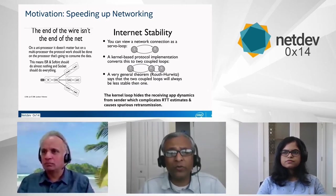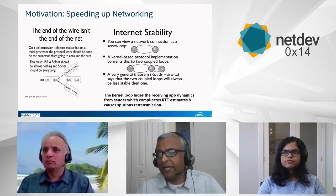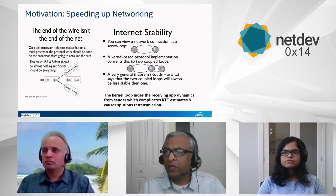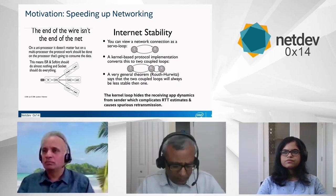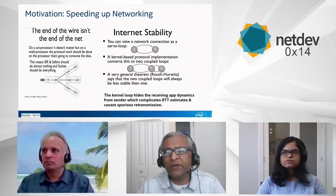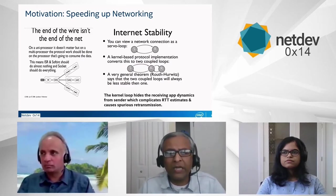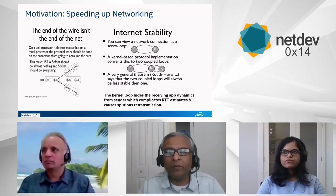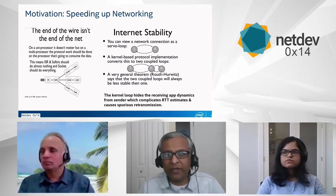So basically, let the socket do everything and do as little work as possible inside the net. When we talk about the net, it comprises several elements: your network device, then the OS software and whatnot until it hits the socket. Now, how does this translate to internet stability? There is a picture on the right-hand side — it shows that a network connection is like a loop between sender and receiver. Back in the old days, when there was no kernel and no protocol-based implementation, it was like a simple loop and there was a strong feedback mechanism both ways. The receiving application and the sender application kind of know each other's dynamics and they are reflected on the wire, and this model worked correctly.